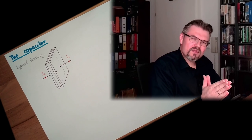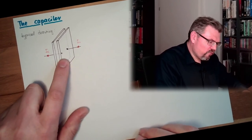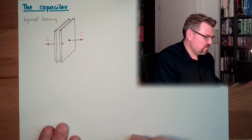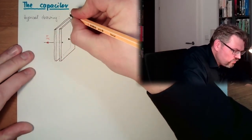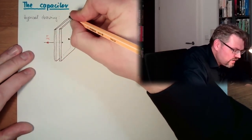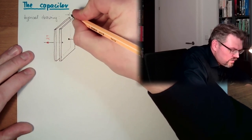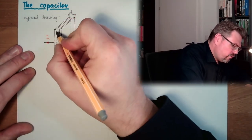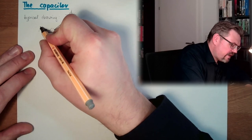So they are not connected. The charges cannot flow from here to here. There is a gap in between. We have a distance D between the two plates. And we have an area of the plates A.